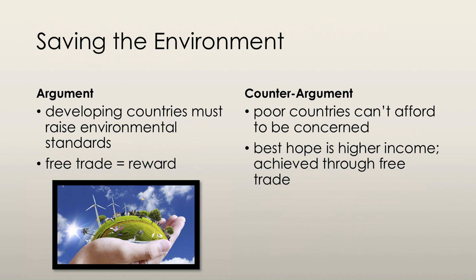The best way to improve the environment is to allow the population's income to grow. As income grows, people have the means and the desire to improve the environment. Income growth is supported by free trade, and thus imposing restrictions would have the opposite effect and would not help improve environmental standards.